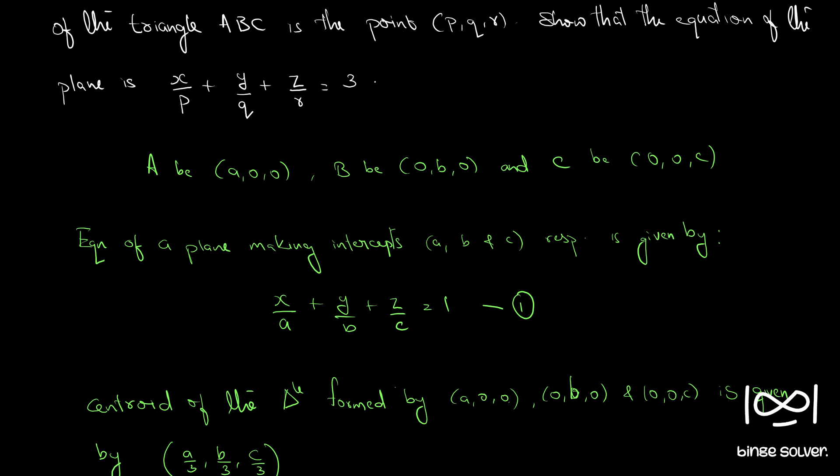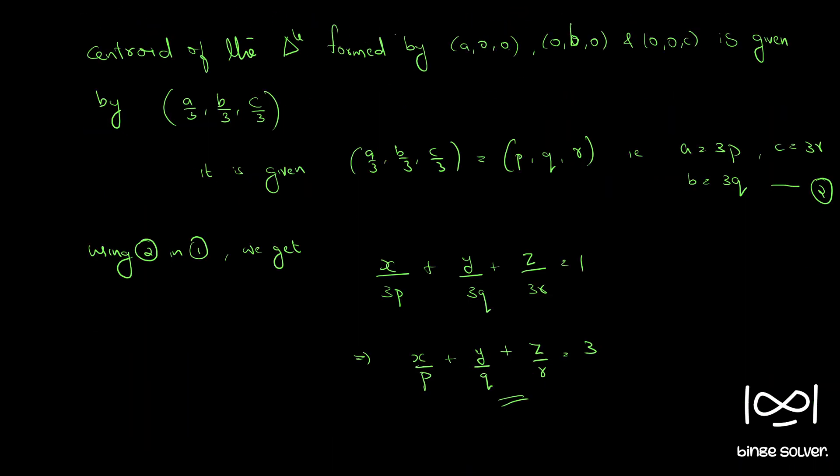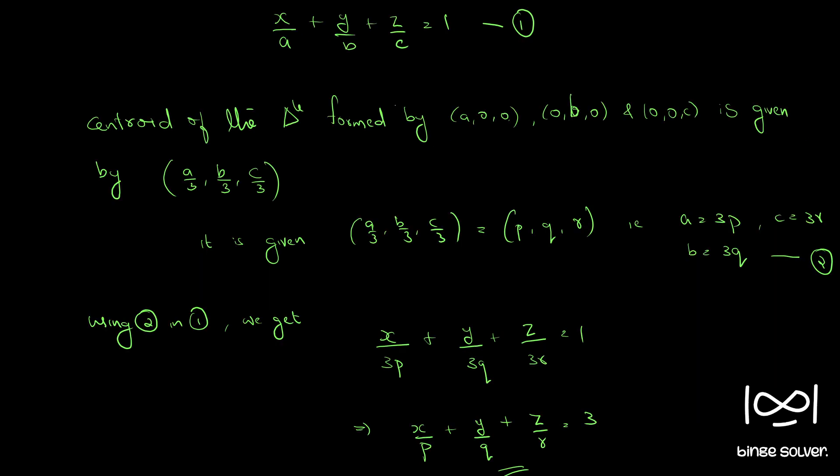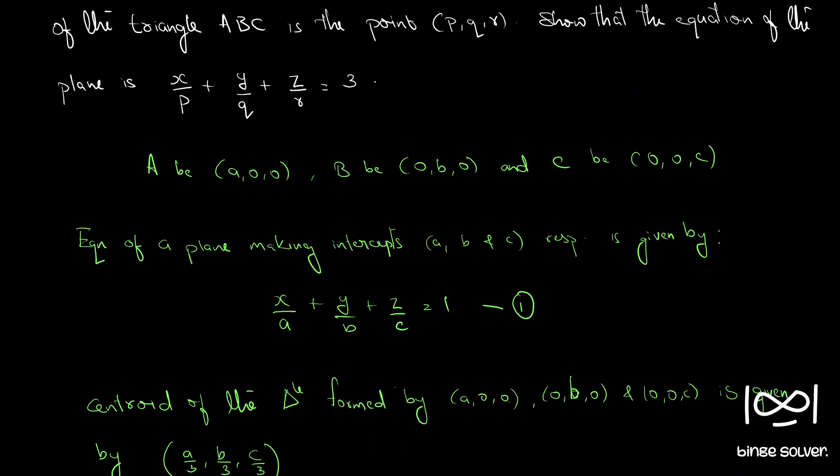So, in an exam hall, if this question comes for a larger mark, you can prove this part - that the equation of a plane making intercepts a, b, c is this equation. Rather than stating it like this, you can prove this equation. Proving this is simple. You can assume a general equation and put (a, 0, 0), (0, b, 0), and (0, 0, c) and you will get this equation. So yeah, this is the solution to question 6. These are the steps.